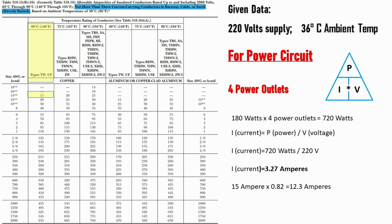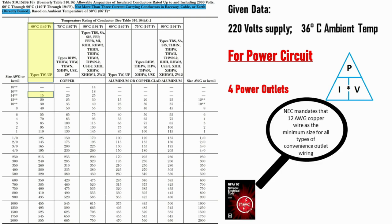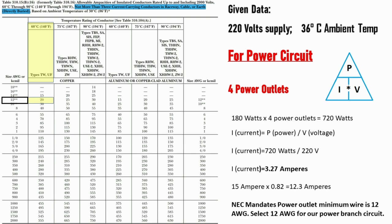Going back to the table, we could select 14 AWG. However, NEC mandates 12 AWG copper wire as the minimum size for all types of convenience outlet wiring. So we select 12 AWG.